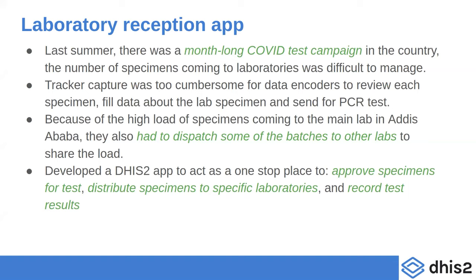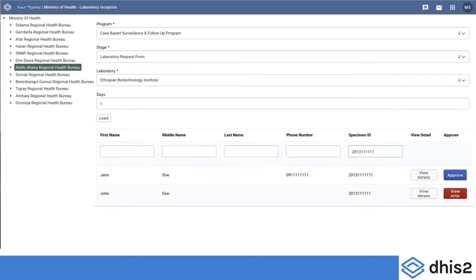To solve this, Ethiopia developed a DHIS2 tracker app to act as a one-stop place for approving specimens, distributing them to specific laboratories, and recording test results. The app has two stages: the laboratory request stage and the result stage. In the request stage, you select the laboratory to dispatch the specimen to and select the number of days to load the data — useful for labs with slow internet connection.